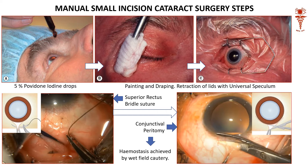Now we go to the interesting chapter on the actual steps of cataract surgery. Once having blocked the eye, we will have to instill five percent povidone iodine as an eye drop into the conjunctiva, so that the conjunctival and corneal ocular surface is cleaned. Then we do painting of the region and draping the eye region with a drape.